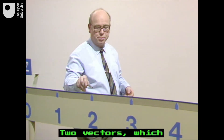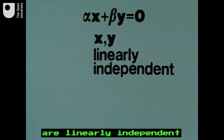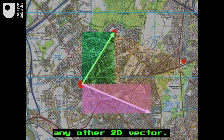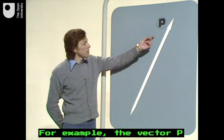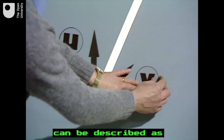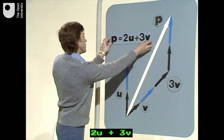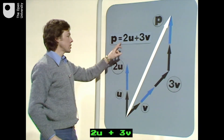Two vectors which are linearly independent can be combined to make any other 2D vector. For example, the vector p can be described as 2u plus 3v.